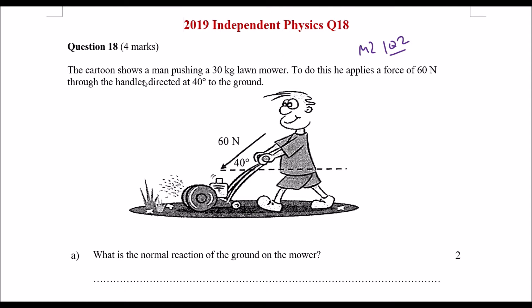We have a cartoon man pushing a lawnmower which has 30 kilograms. To do this he applies a force of 60 newtons pushing down through a directed angle of 40 degrees above the ground. What is the normal force of the ground on the mower?